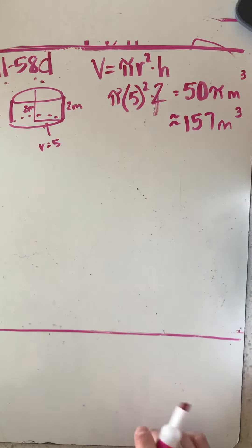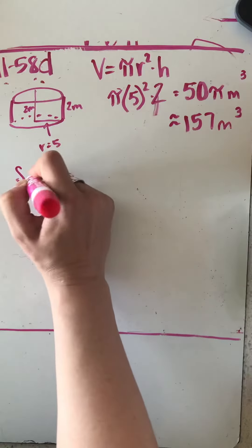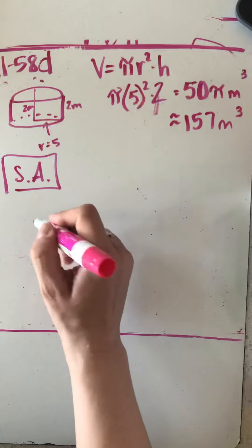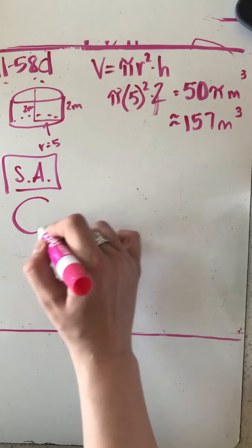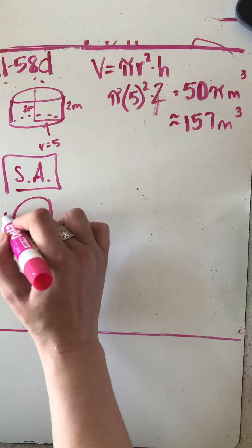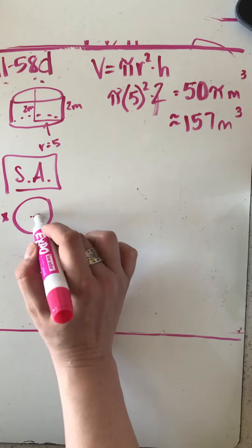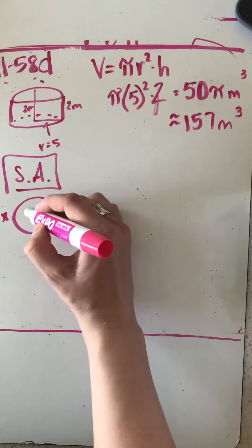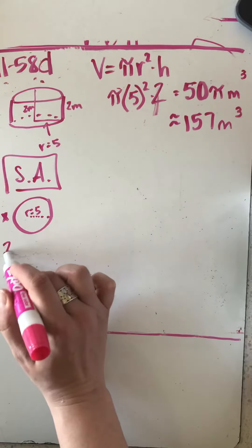The surface area of a cylinder, you want to find the area of all the faces and add them together. I've got my two bases which are circles, so 2 times a circle with a radius of 5. That means my equation is going to be 2 times πr², π times 5 squared, plus the lateral surface area.